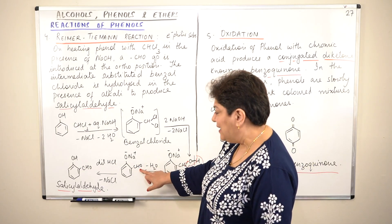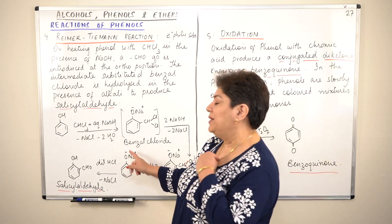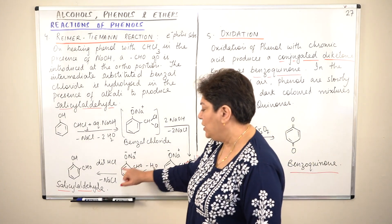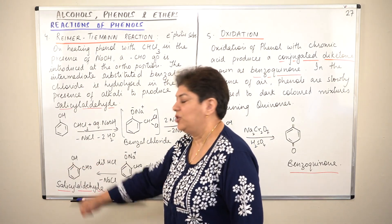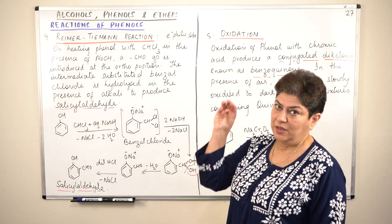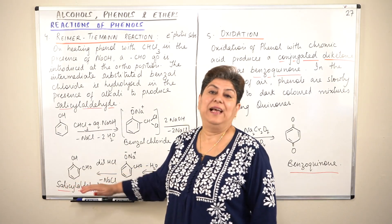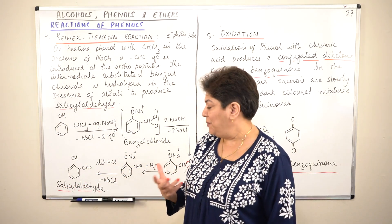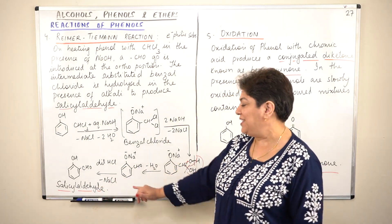As soon as you get the aldehyde group, you make it react with dilute HCl. The sodium is lost and is replaced back with hydrogen. The sodium combines with chlorine to form sodium chloride, and the hydrogen goes back to restore the phenolic OH group, resulting in the formation of salicylaldehyde.